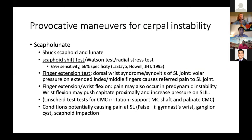On the scaphoid-lunate shuck test, grasp the scaphoid tubercle with your index finger, the dorsal aspect of the scaphoid with your thumb, go about a centimeter in line with the middle finger to have the same position with the lunate, and move them back and forth. The scaphoid shift test: put the hand in ulnar deviation, hold the scaphoid between your thumb and index finger in an extended posture. As they move the hand radially, you'll feel the scaphoid pushing toward you — suddenly let it go and see if there's an audible or palpable clunk or pain. Painful clunks are worse than non-painful.